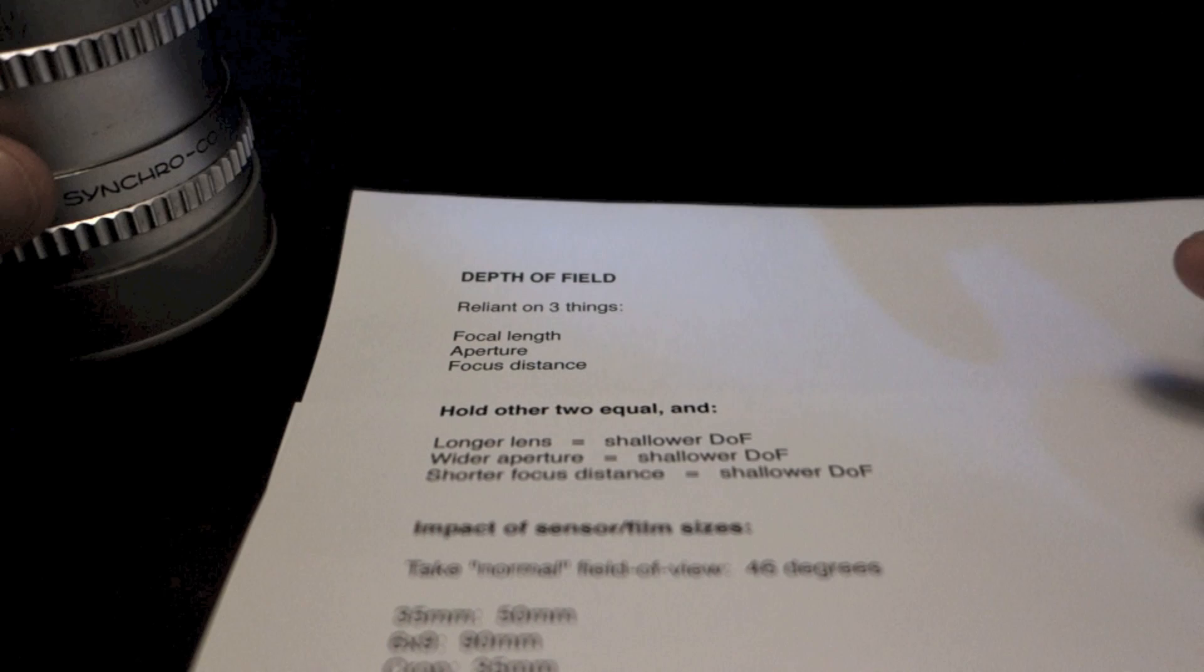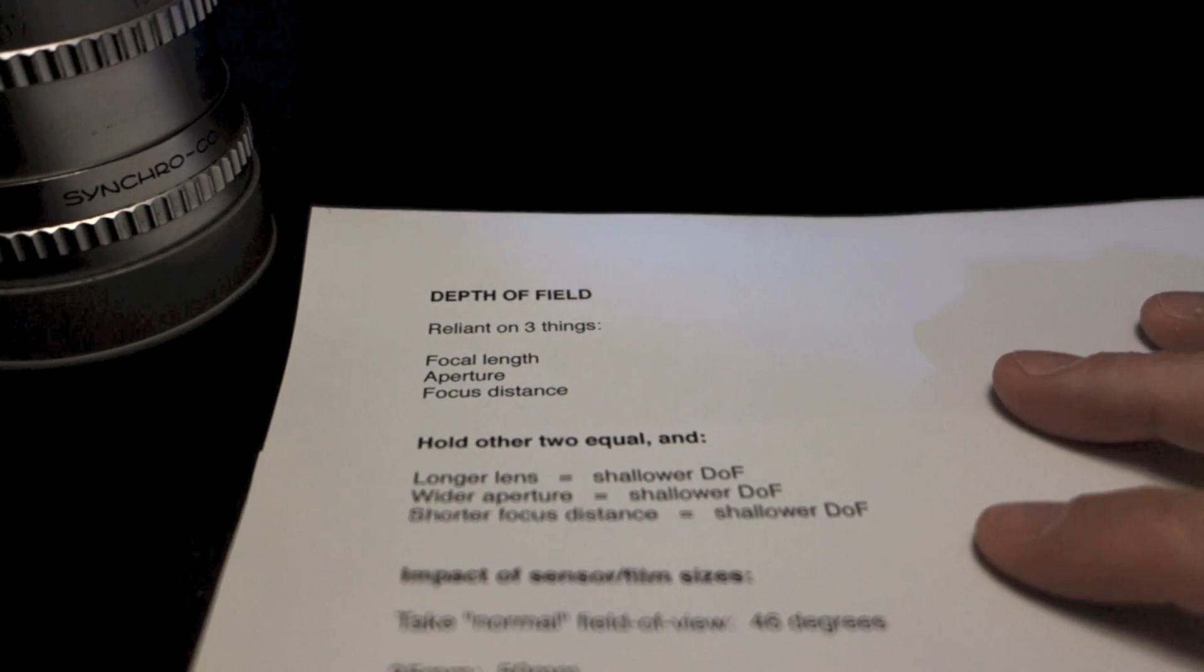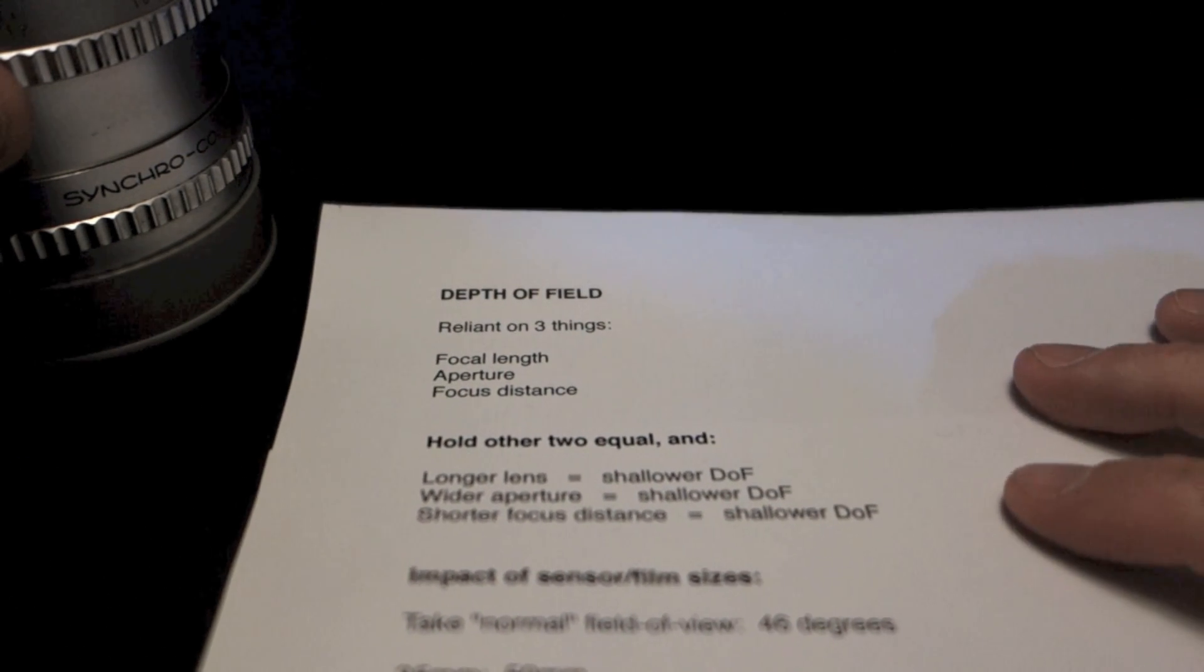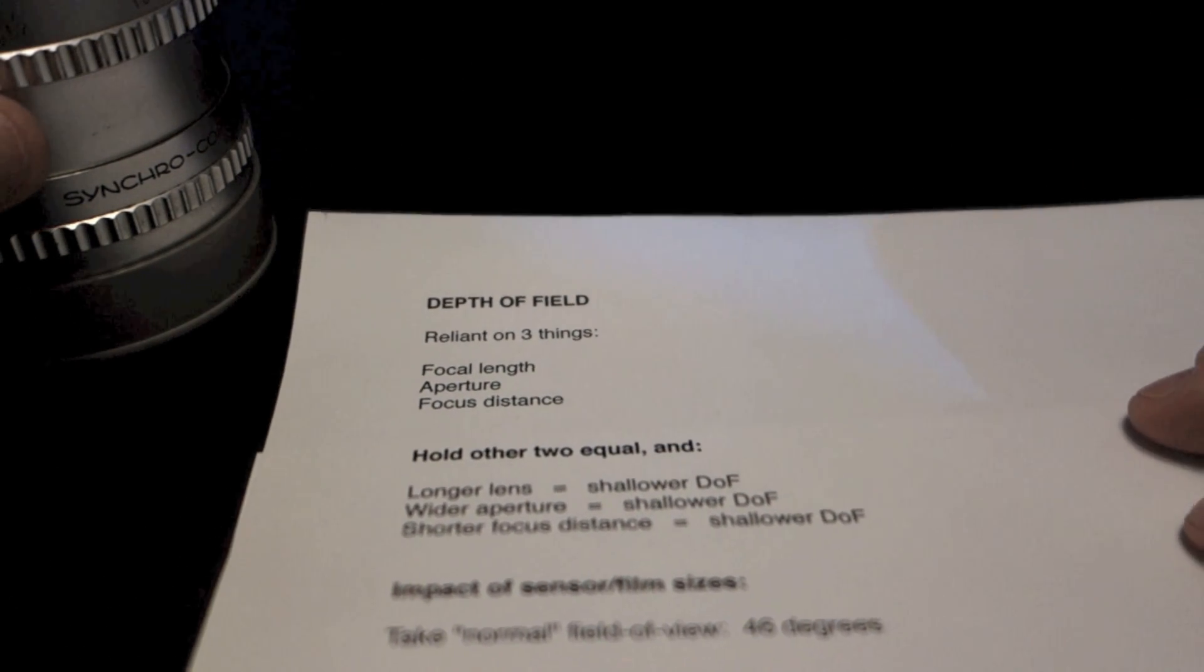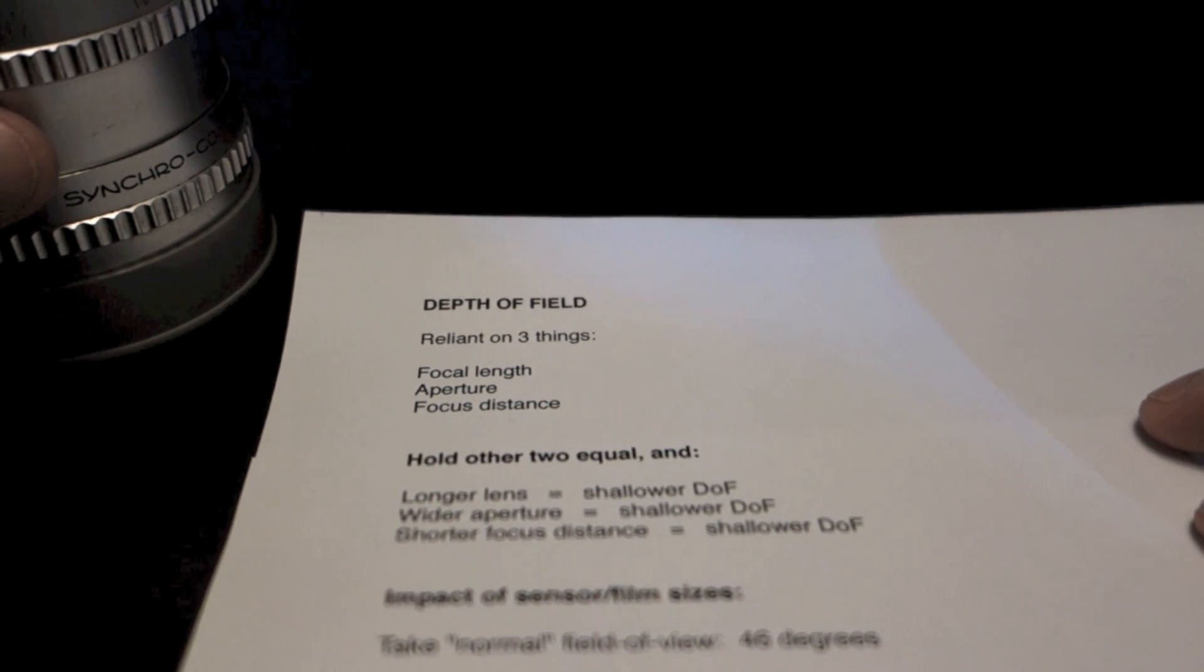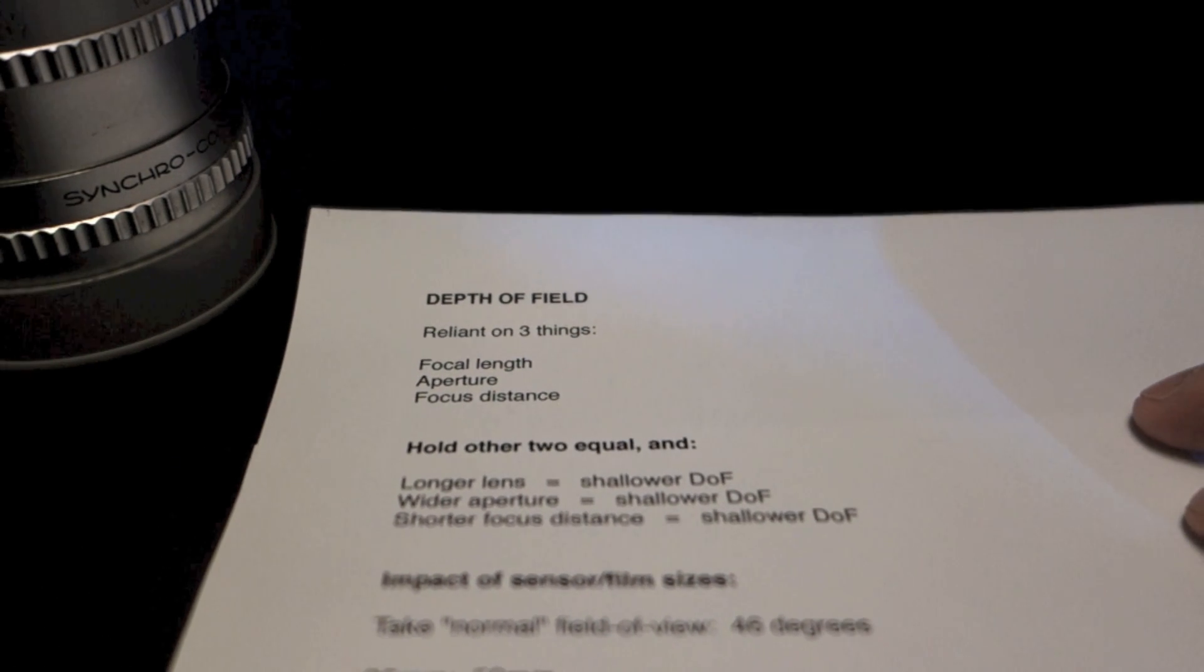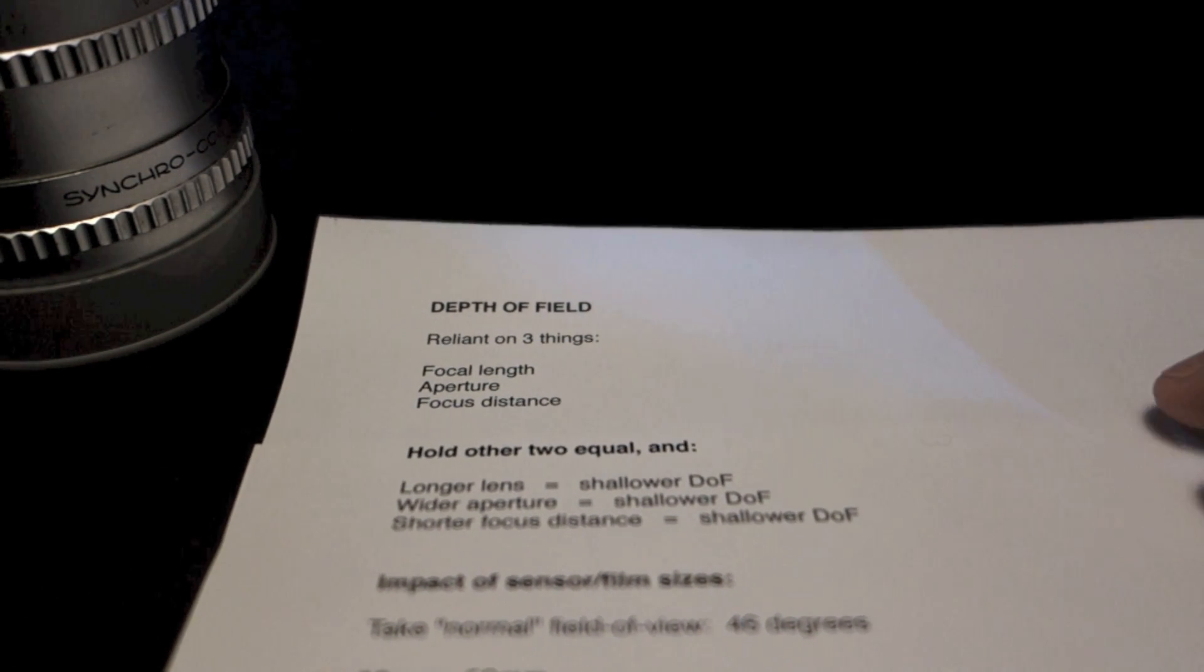So let's start talking about what depth of field is based upon. The three things that it's based upon are your focal length, aperture, and focus distance.